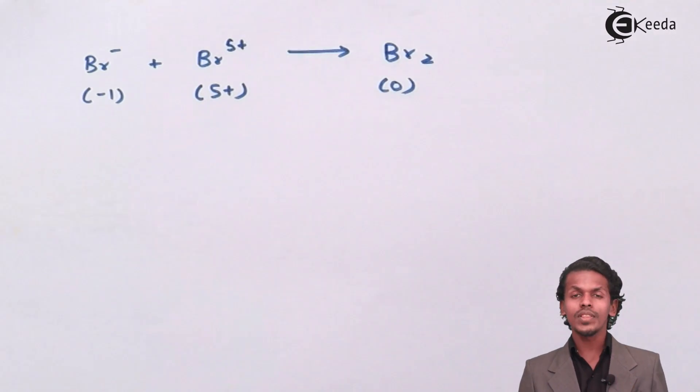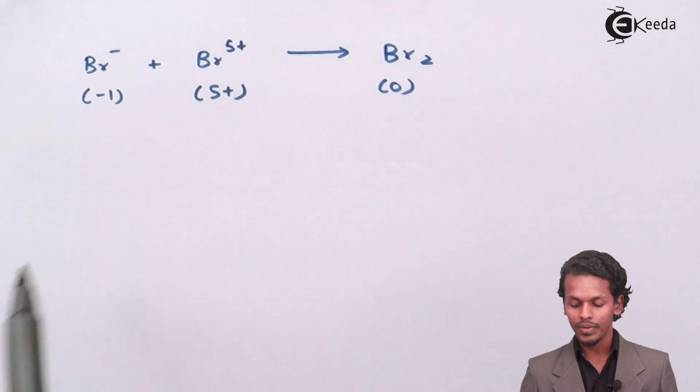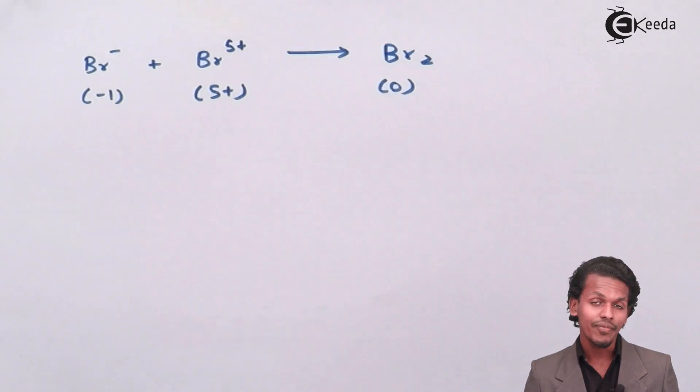In this case, both reactants have the same element which is in the product form but are of different oxidation numbers.